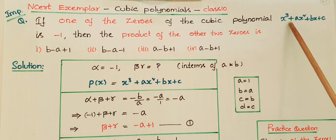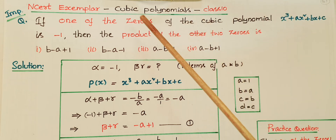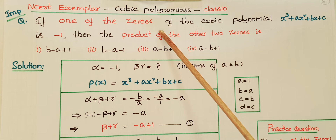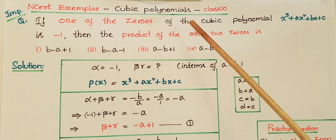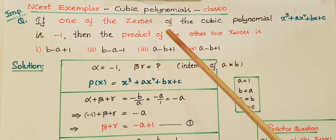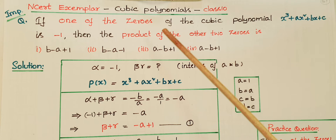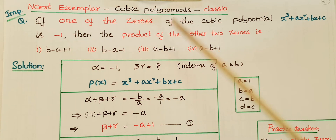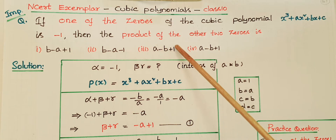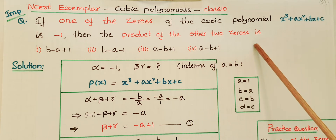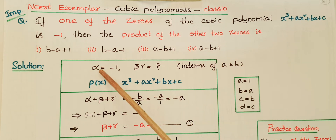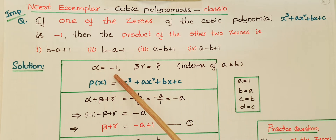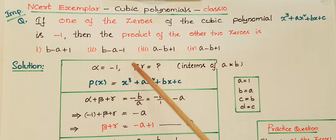The cubic polynomial has three zeros, and one of its zeros is given as minus 1. We know that cubic polynomial zeros are alpha, beta, and gamma. So if we take alpha equal to minus 1, then we have to find the product of the other two zeros, that is beta times gamma.